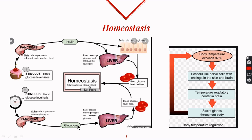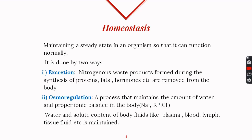If the glucose level inside the blood falls, alpha cells of the pancreas secrete another hormone called glucagon. Glucagon converts glycogen stored inside the liver back into glucose and sends it to the blood to normalize the blood sugar level. This homeostasis is very important because if glucose level in blood is too high, diabetes is caused; if it is very low, it can put a person into a coma.